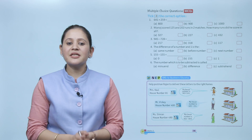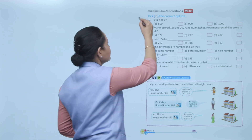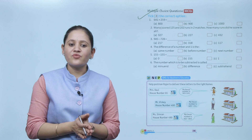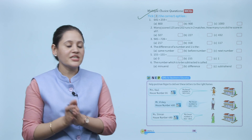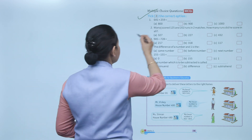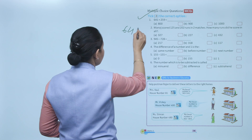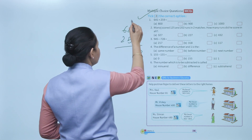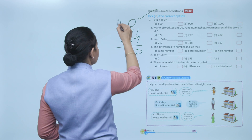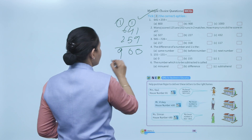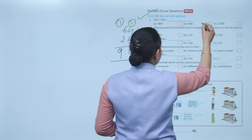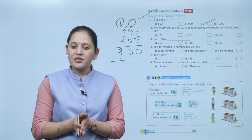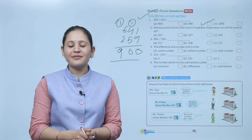Next are multiple choice questions. Select the correct option: 641+259. Ones: 9+1=10, write 0 carry 1. Continuing the addition gives the answer 900. You have to practice all the questions of this chapter. Here we end the chapter.